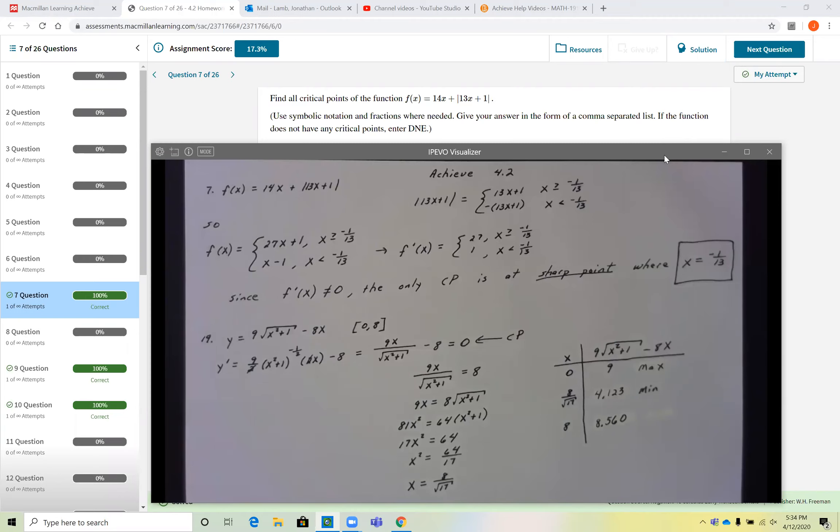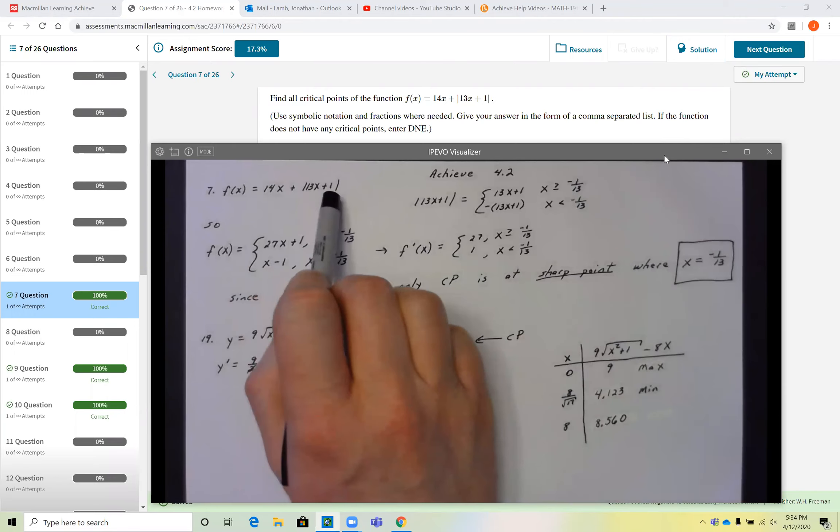Hey guys, let me go ahead and show you how to do a couple of problems on Achieve in section 4.2. Now yours will be slightly different from mine, but should be similar. Number seven is a good question. It's a little tricky. It involves an equation with an absolute value.